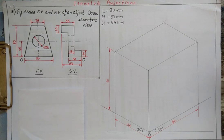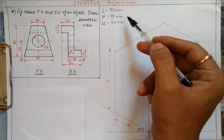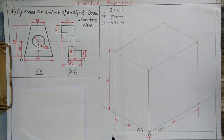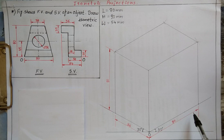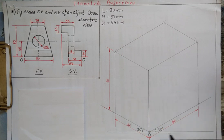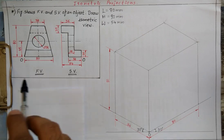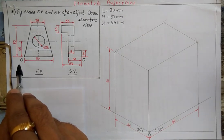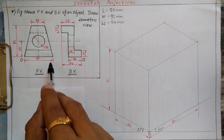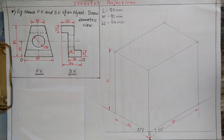The next step is to prepare a box with dimensions equal to length 80 mm, height 90 mm, and width 54 mm. I draw one horizontal line, mark an origin point, and from that origin draw three lines — two inclined at 30 degrees to the right and left, and one straight vertical line perpendicular to the horizontal. From the left corner of the front view we mark the length of the object to the right.